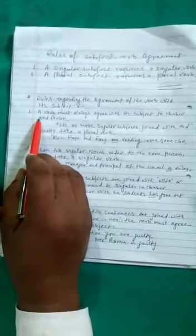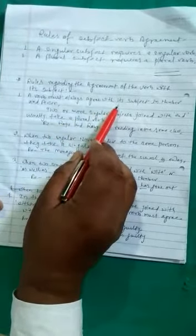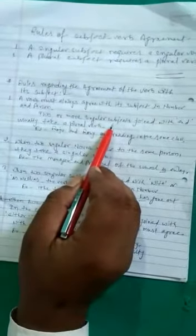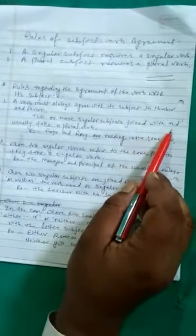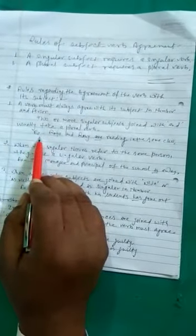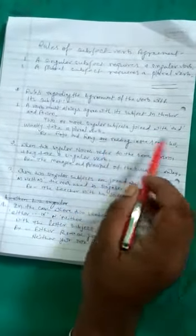First rule, a verb must always agree with its subject in number and person. Two or more similar subjects joined with and usually take a plural verb. As for example, Raju and Roji are reading in the same class. Here, Roji and Raju are plural subjects. They take plural verb, are.